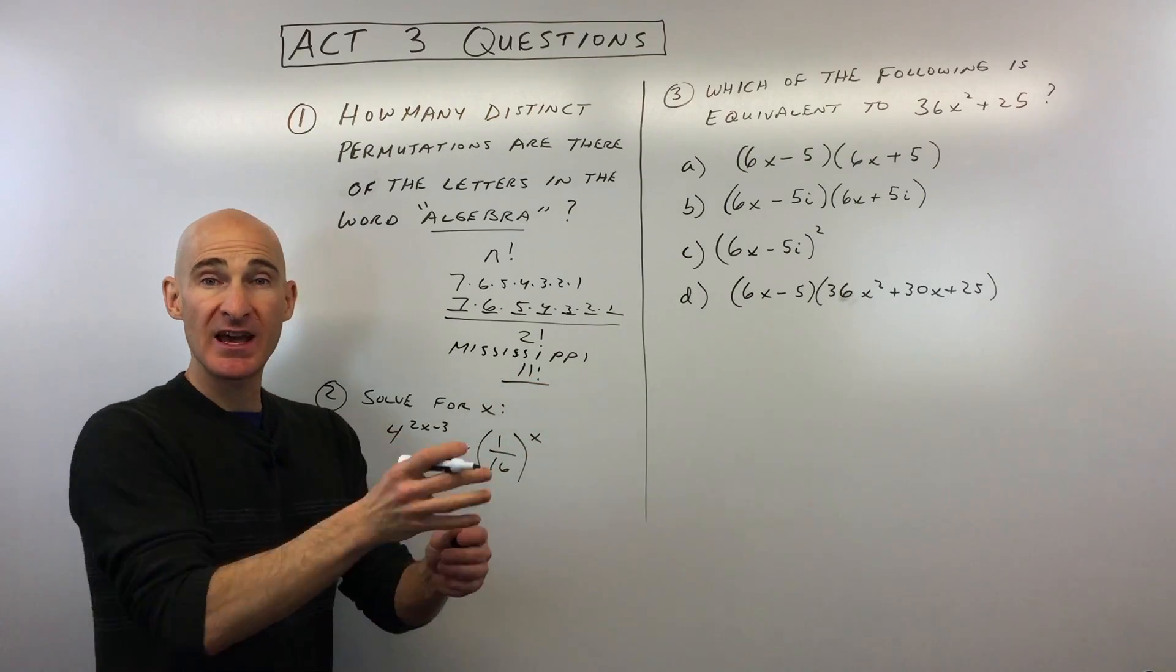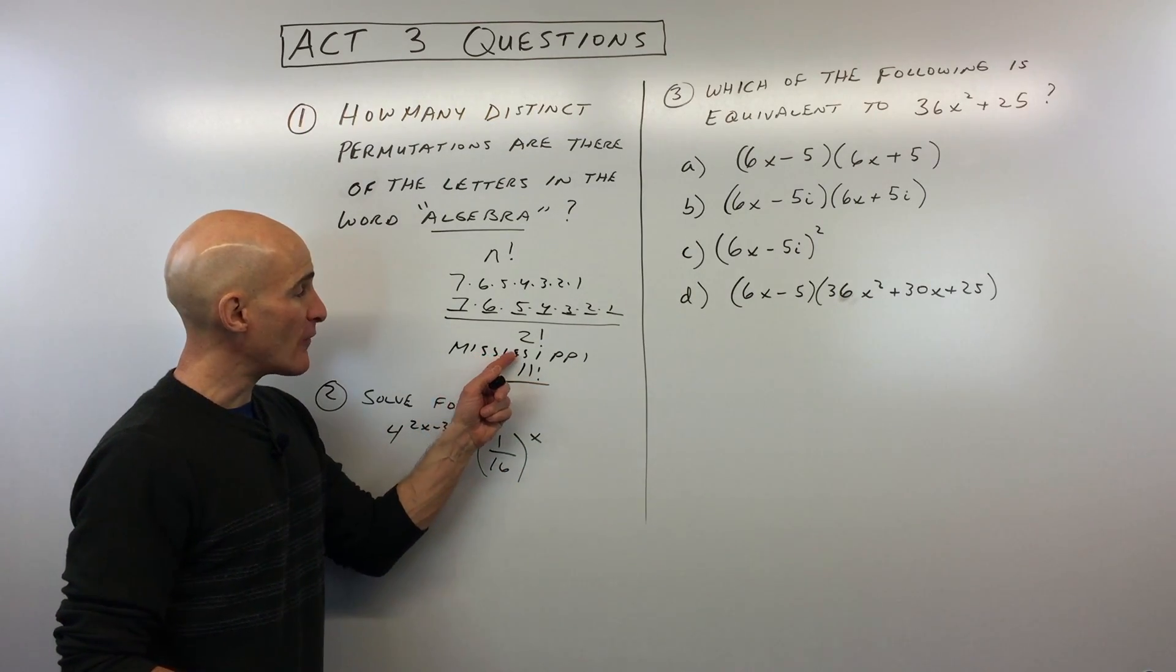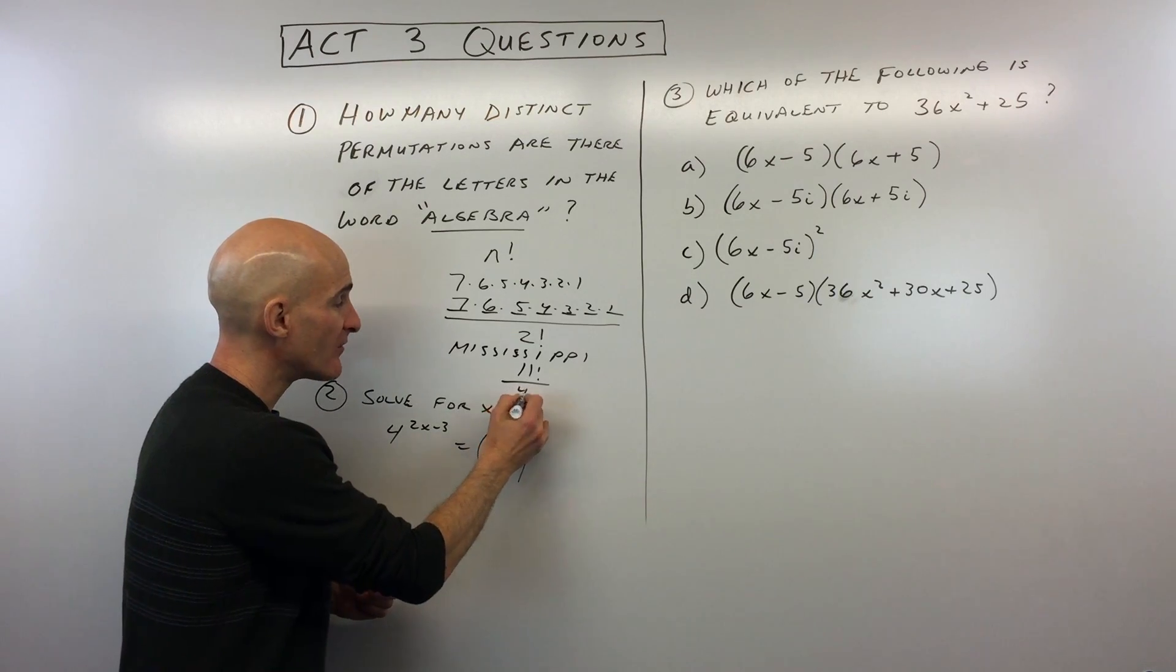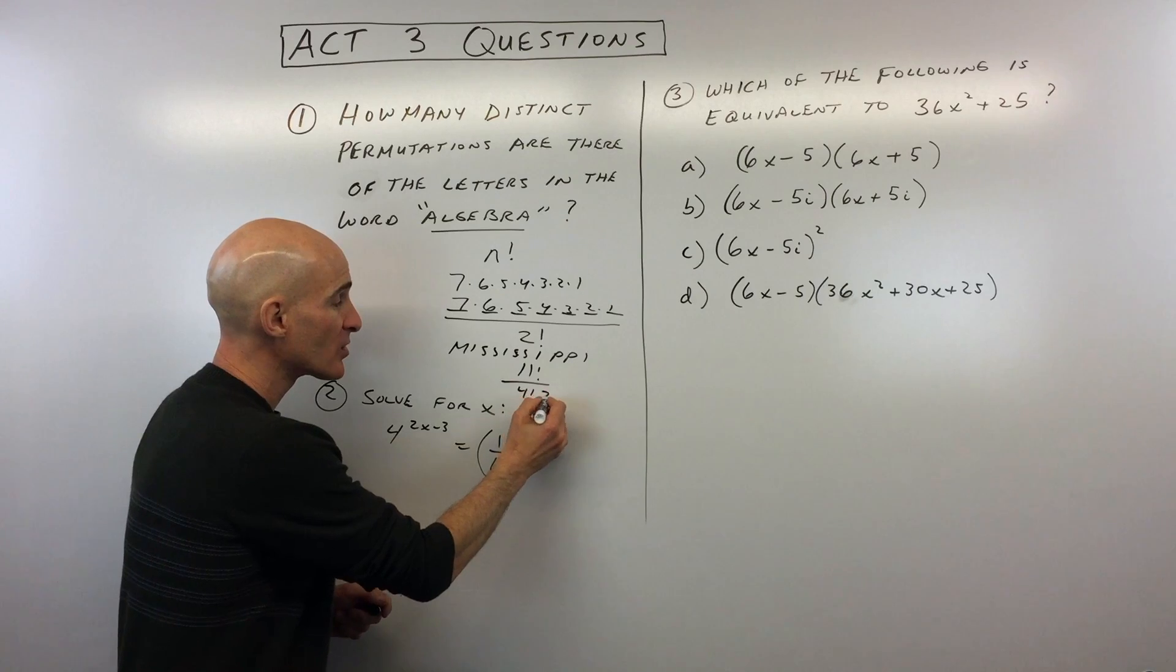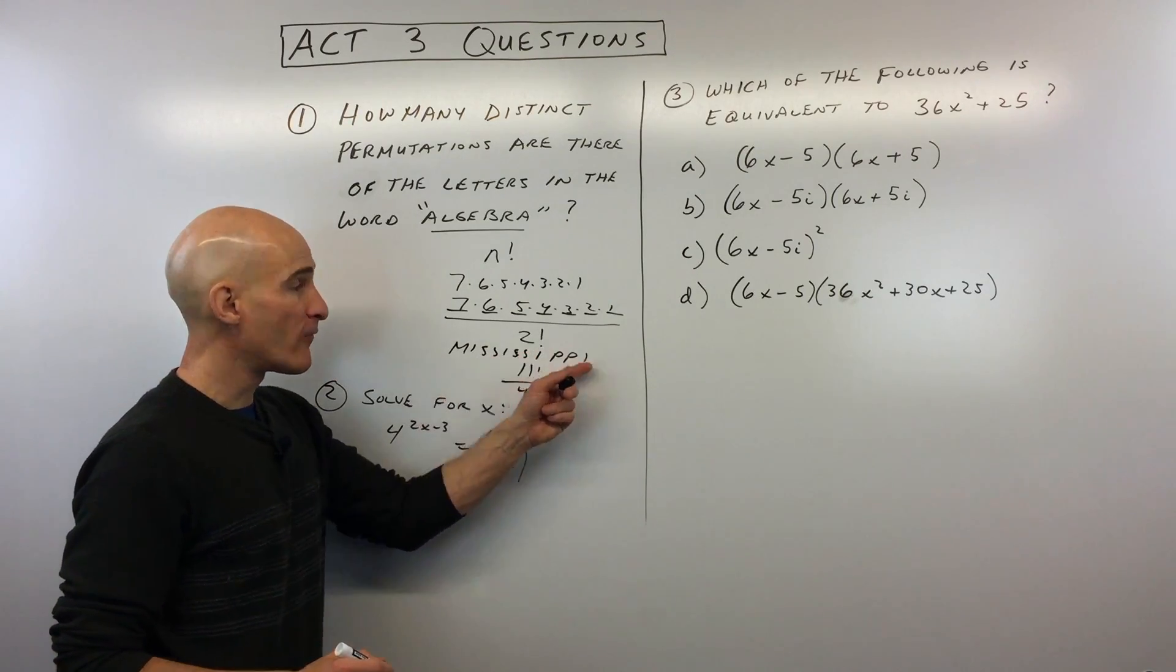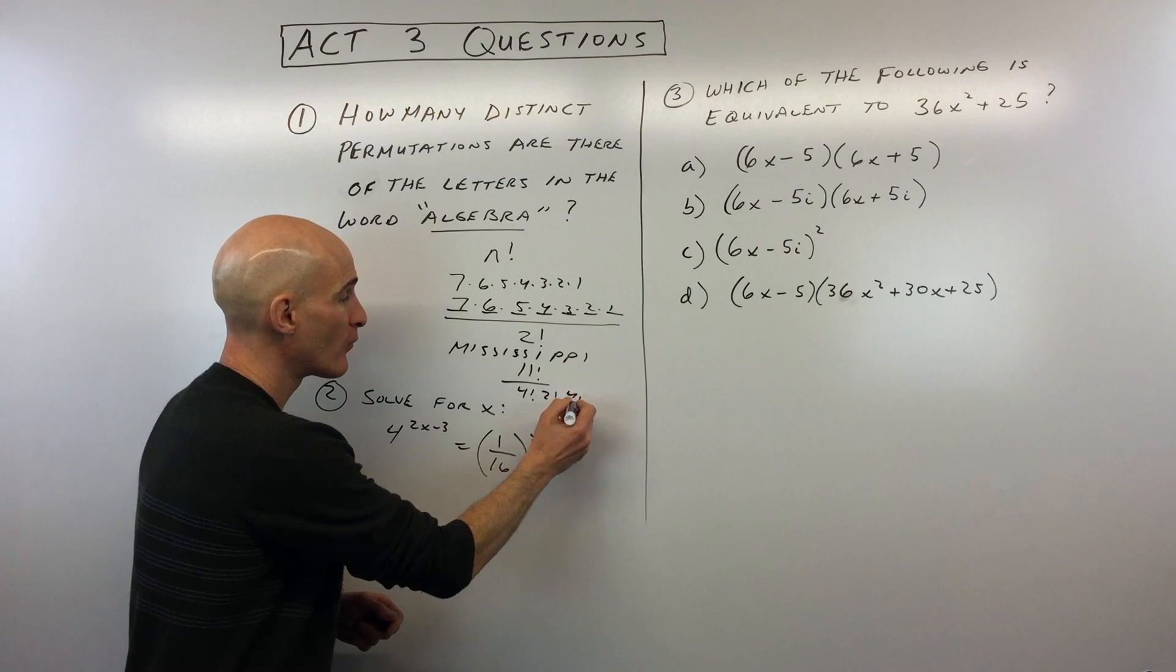So there's going to be 11 factorial different ways of arranging those letters, right? 11, 10, 9, 8, all the way down to one. But notice how we have four S's, so we're going to divide out four factorial. We've got two P's, we're going to divide out two factorial, and we have four I's, so we're going to divide out four factorial.